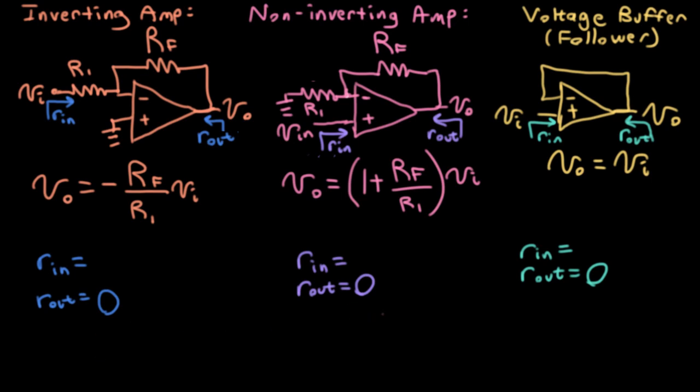Now let's think about input impedance. For the non-inverting amp and the voltage buffer, the input impedance is infinite. And why is it infinite? Well, we're taking our input and jamming it right into the positive input of the op amp. And again, we're assuming these are ideal op amps, and hence have infinite input impedance.